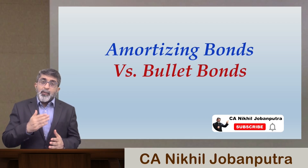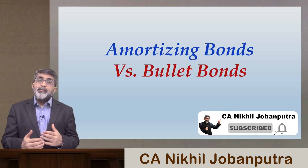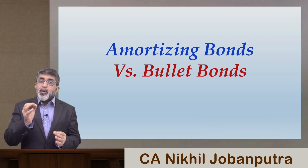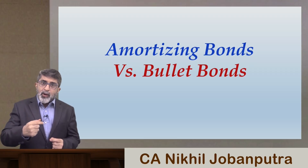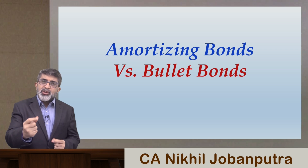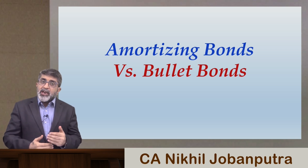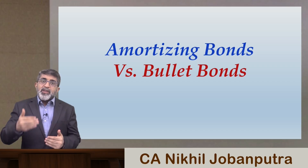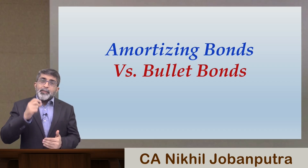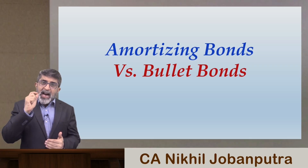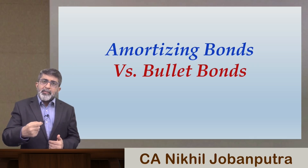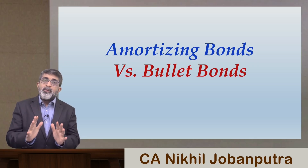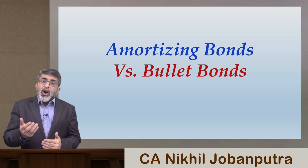The first thing that comes to mind is two important categories of bonds: amortizing bonds versus bullet bonds. In case of a bullet bond, the borrower has borrowed the principal amount and will repay it only after the completion of the maturity period. For example, if the maturity period is 10 years, the principal is borrowed today and repaid after 10 years, with annual coupon payments made throughout.